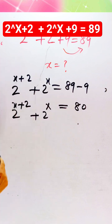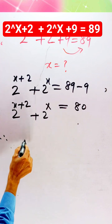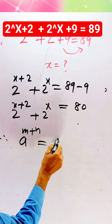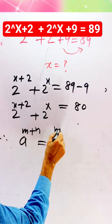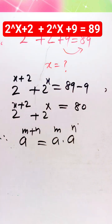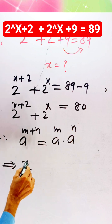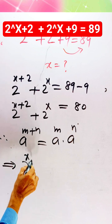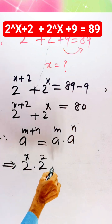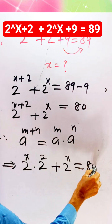Now we simplify 2^(x+2) according to the exponent rule: a^(m+n) equals a^m times a^n. Applying this rule, we rewrite 2^(x+2) as 2^x times 2^2, so the equation becomes: 2^x times 2^2 plus 2^x equals 80.